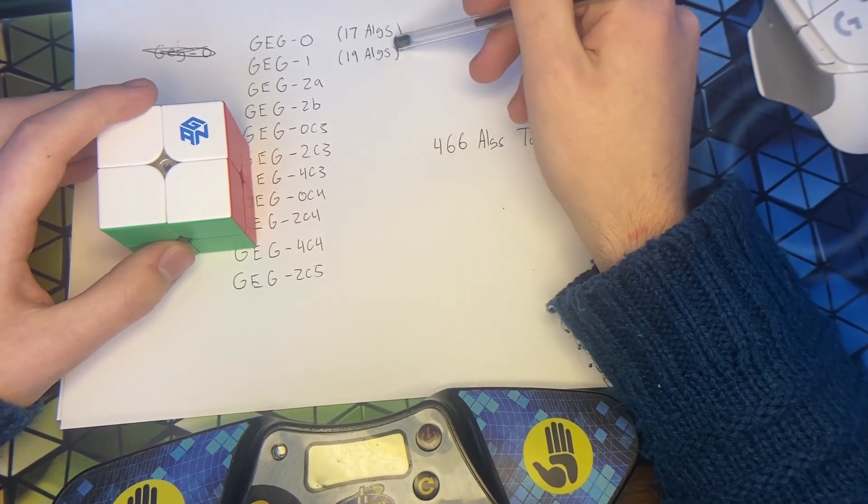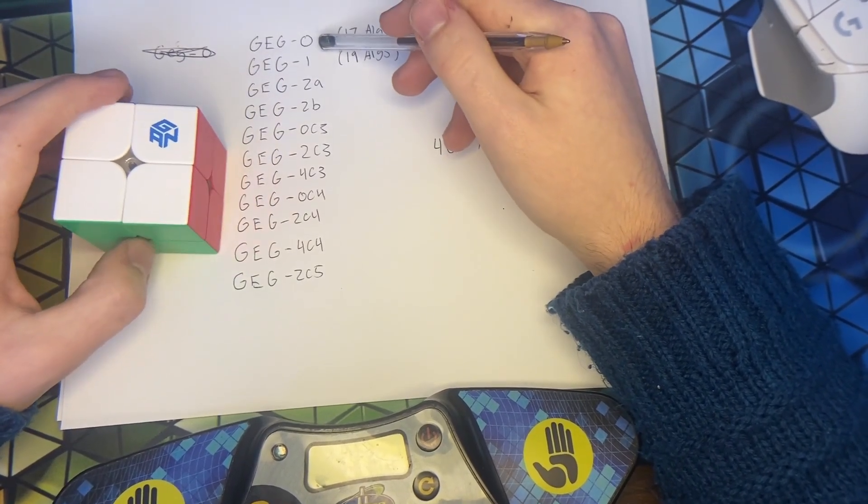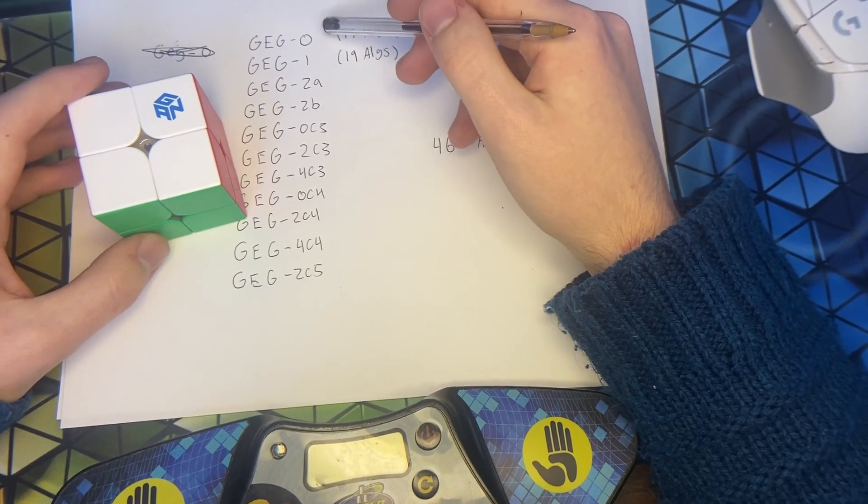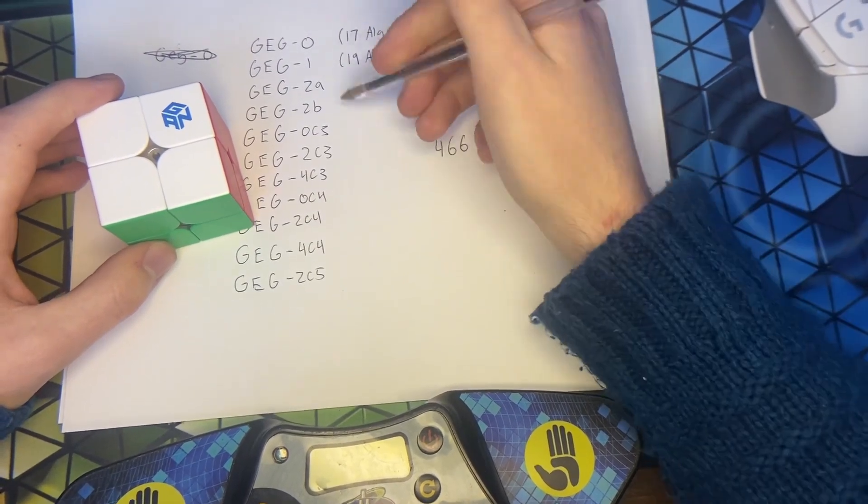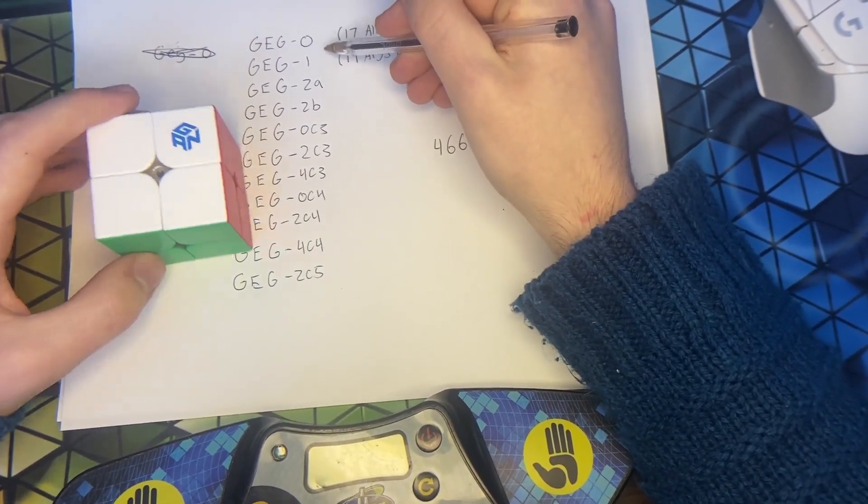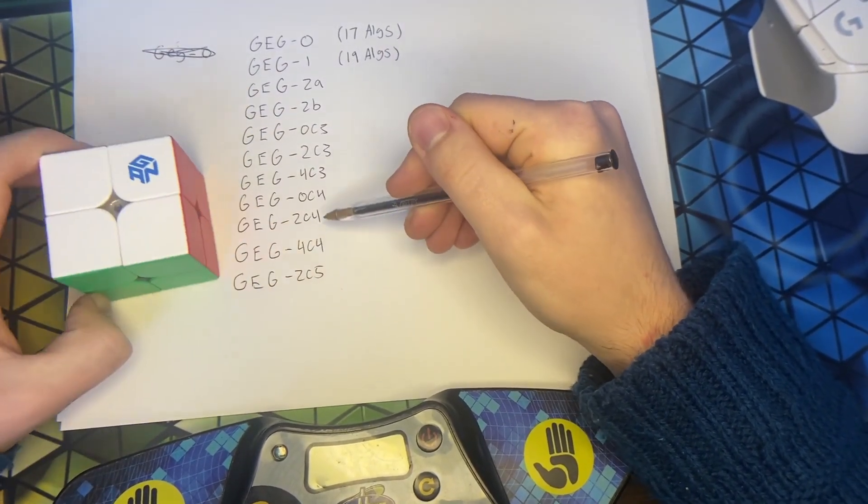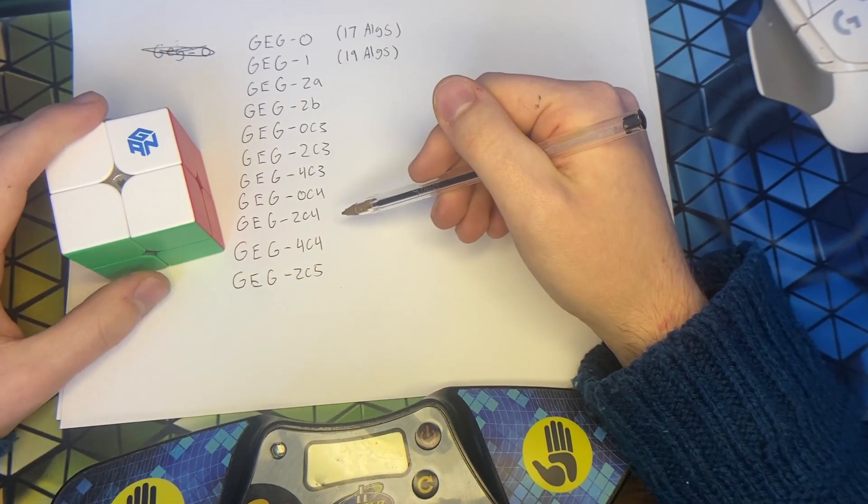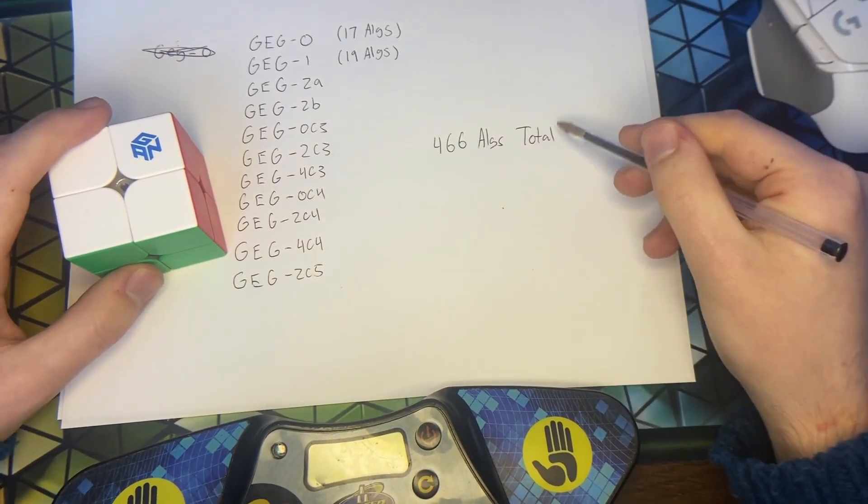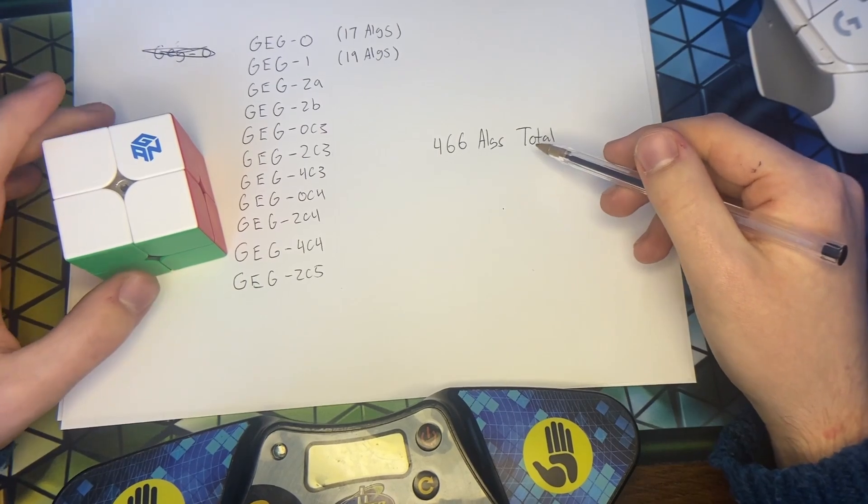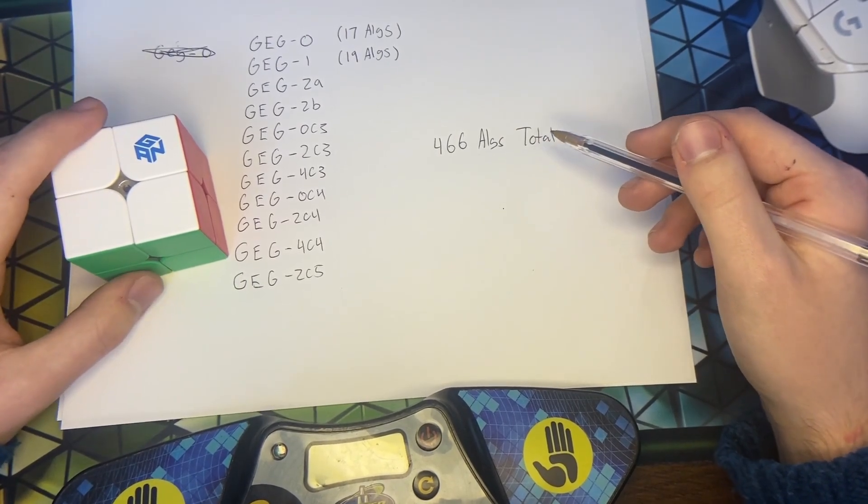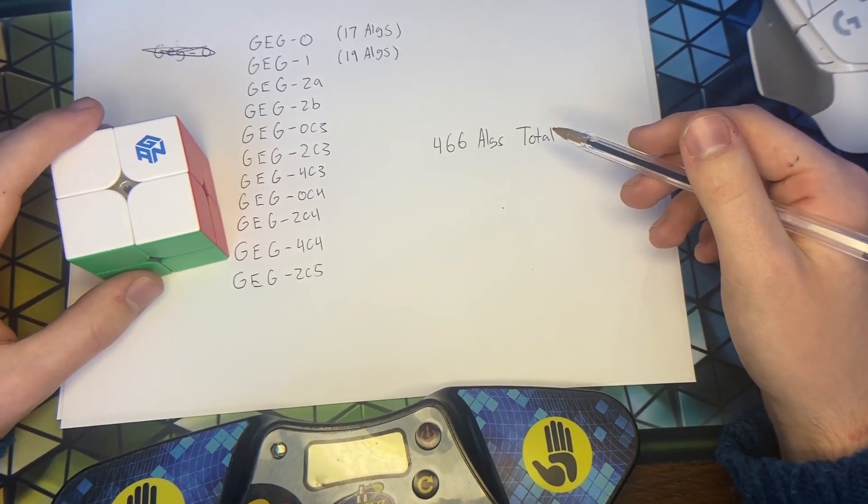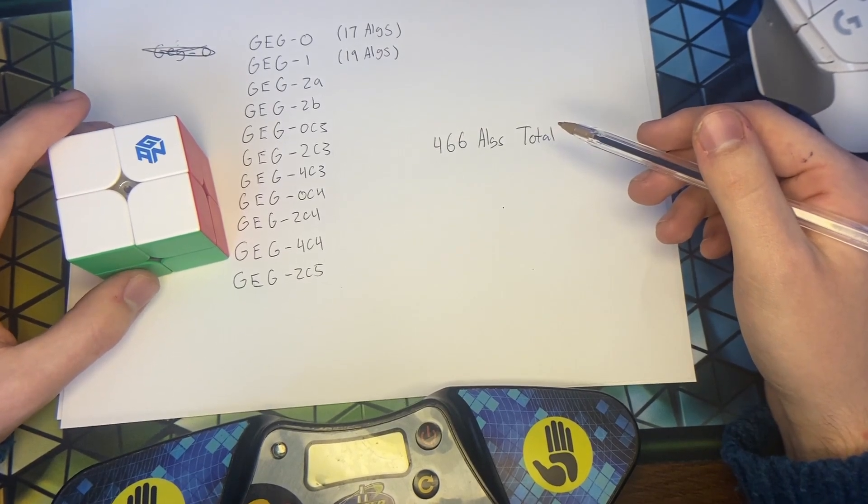So, here's all the example solves I just showed were from this subset, GEG0. Although there are 11 subsets. And, generally, the further you go down the list, the more algs each of these subsets has. And it's 466 algs total. Which I think is very doable. And it's probably worth it, compared to how good this method is.